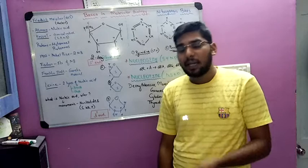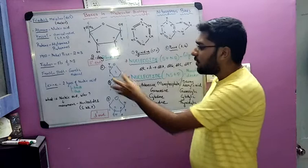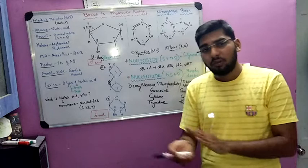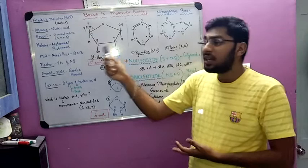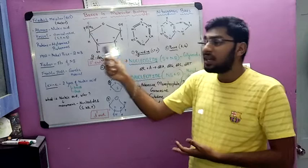We have covered sugar and nitrogenous bases. A nucleotide is made up of three components: sugar, nitrogenous base, and phosphate group. The phosphate group is H₂PO₄ — phosphoric acid. Whenever the OH group is present, the phosphate group attaches and a water molecule is removed by condensation, forming a phosphodiester bond.